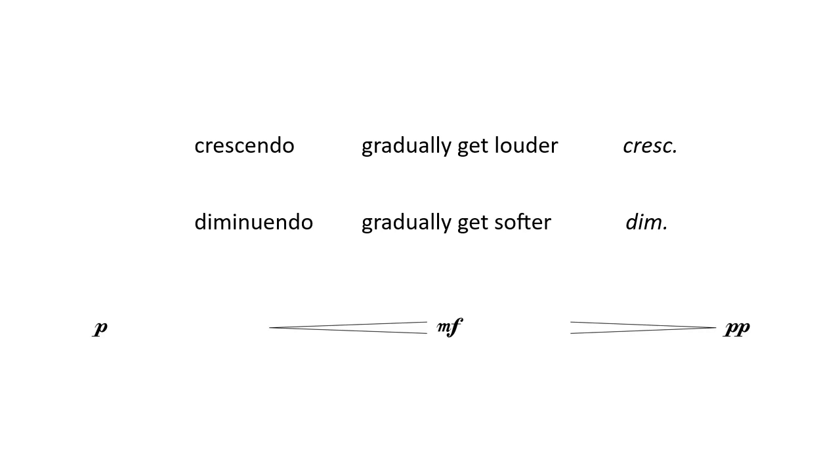The terms crescendo and diminuendo may be replaced by hairpins, which are two lines that make a wedge. In formal notation, there should be a dynamic at the end of every hairpin, although composers often break this rule.